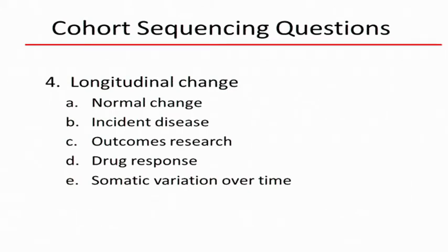Gene-environment interactions are important here because we don't have confounding between disease and treatment. Francis reminded me that the healthcare overhaul bill has a large component on outcomes research. We can begin to understand the role of genetic variation in outcomes — whether it be mortality, second events, response to treatment, et cetera. Another point raised multiple times was somatic variation over time. In large-scale longitudinal cohorts we have the ability to understand the role of changes in the genome and how that gives rise to malignancies over time.